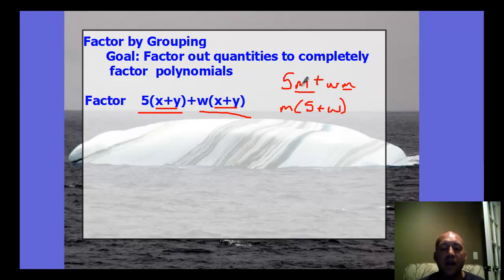The common factor we're going to factor out is a quantity. We're not factoring out a single letter; we're factoring out this entire group because that same group is in both terms. When we do that, you're left with the 5 plus W. It's very similar to the M example, but instead of being M, it's a group, X plus Y. Students have a hard time with this because they see an X plus Y and another one,